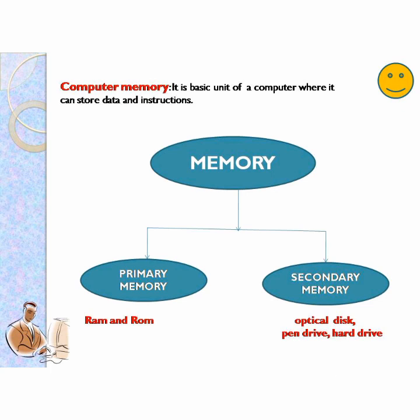RAM and ROM are primary memory, whereas optical disc, pen drive and hard drive are coming under secondary memory.